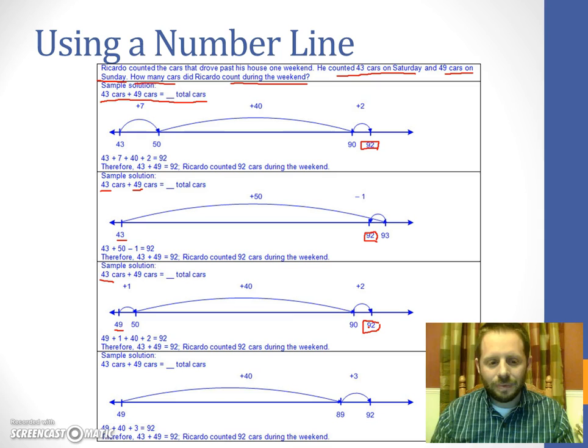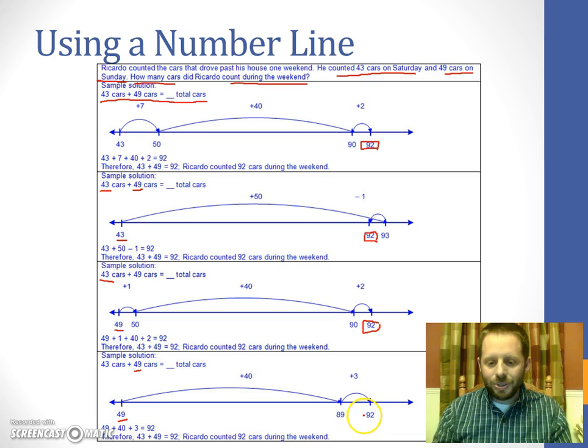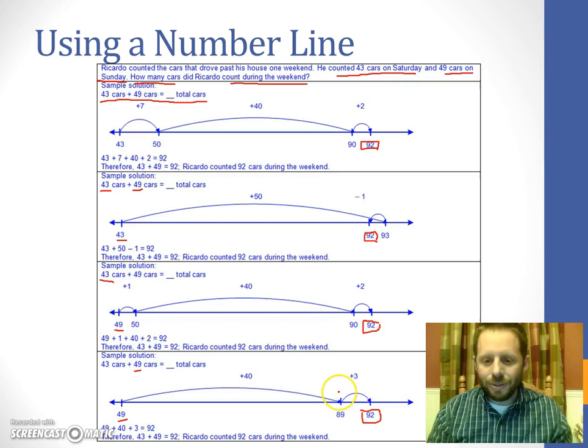Last one, you've got 49 we're starting with. And this time, I broke it into just the 40 and a three, because I thought, well, 40 is not hard to add to 49. That just takes me 89. And then I can just count up three more if I need to. So 90, 91, 92. So no matter which way you do this problem, no matter how you break up your two addends together, you still wind up in the same place on the open number line.